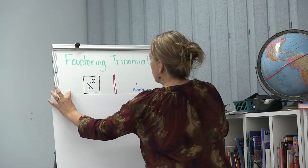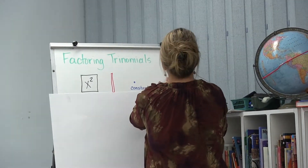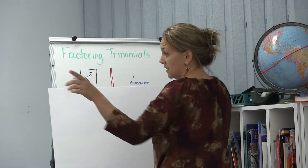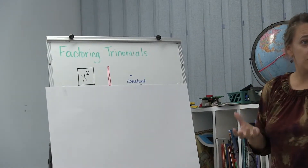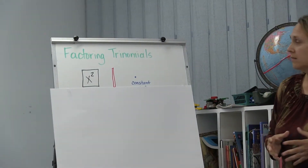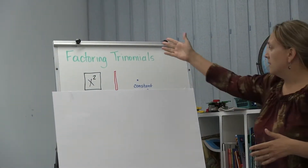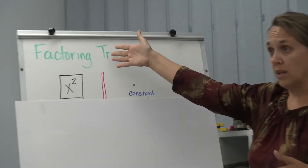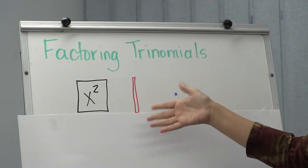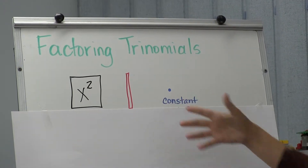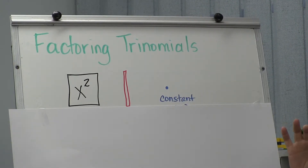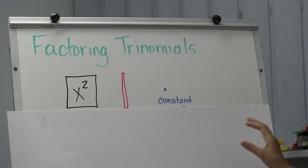We can talk about, just like they did in the lower grades, that x squared is a square. A single x would be one rod. And a constant or a number would be a single unit.